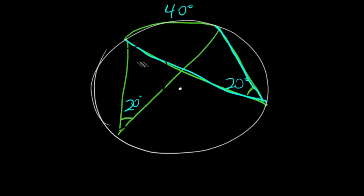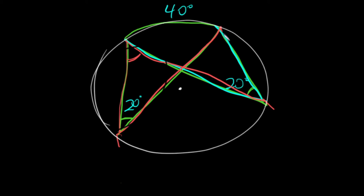As for these other two inscribed angles, we can see that those also intercept the same arc from here to here. By intercepting the same arc, both inscribed angles up here are congruent to each other, and they both measure one half of this arc's measure.